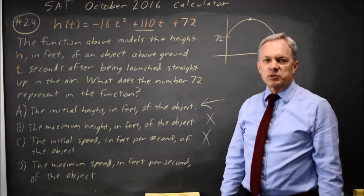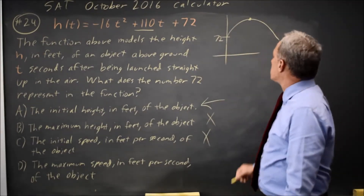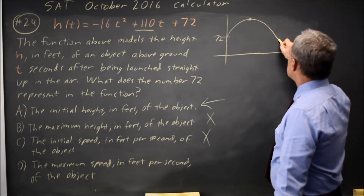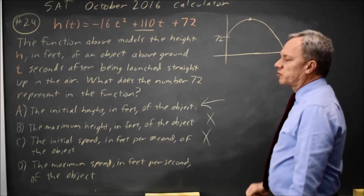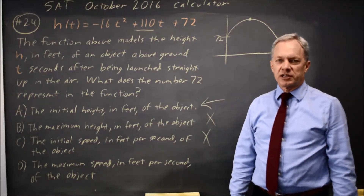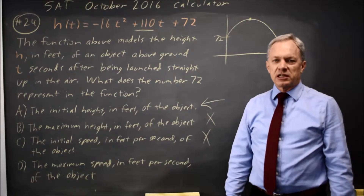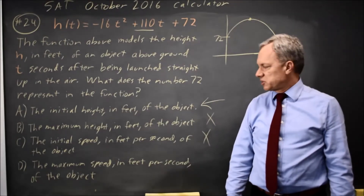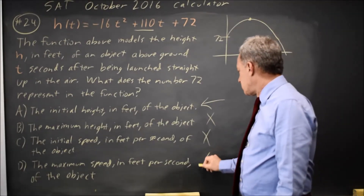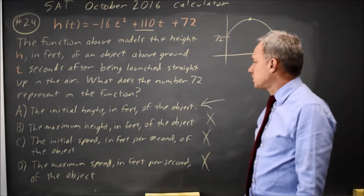Choice D is the maximum speed, which occurs just before the object hits the ground, and that is not 72. So that one is incorrect.